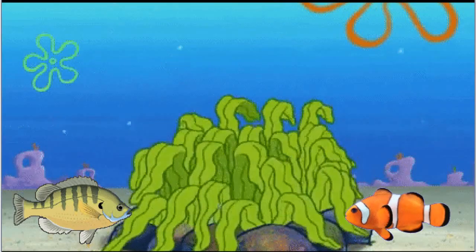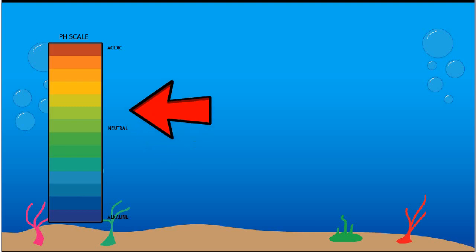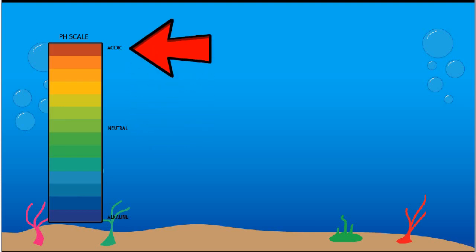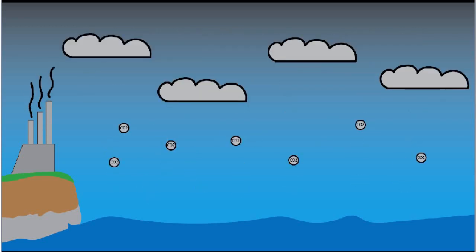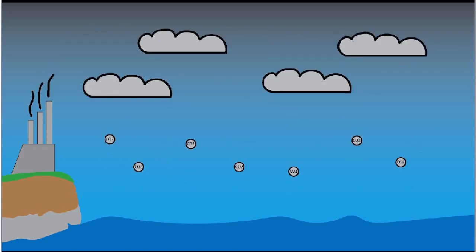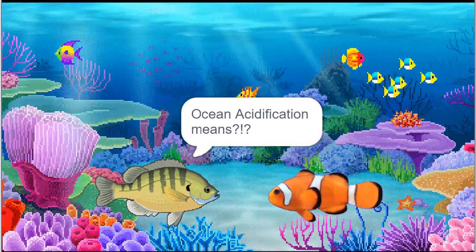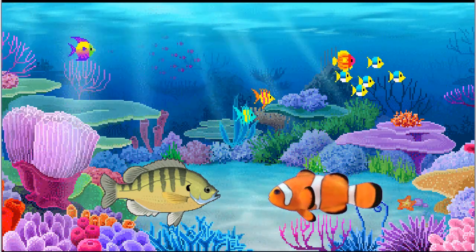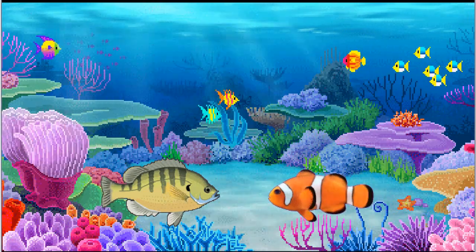Ocean acidification is the reduction in the pH level of the ocean over an extended period of time, caused by the carbon dioxide from the atmosphere. CO2 concentrations in the atmosphere increase due to industrialization, caused by the use of fossil fuels and expansion of land. The ocean absorbs approximately 30% of the CO2 released in the atmosphere. I thought it referred to the change in pH levels in the oceans because of acid rain. I think you do know something, but you're just confused.